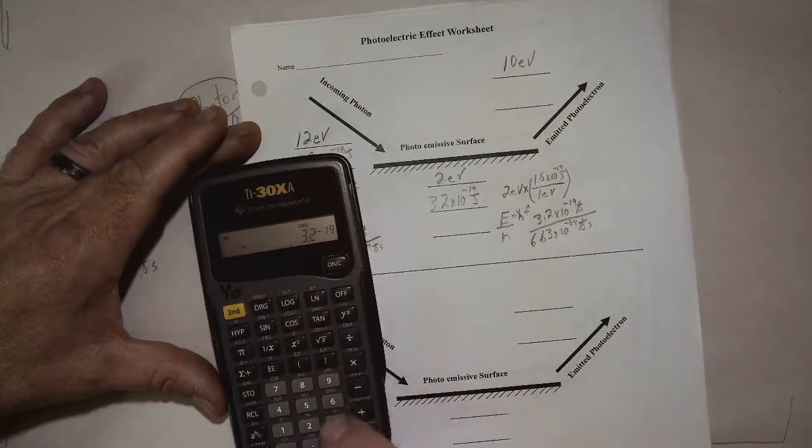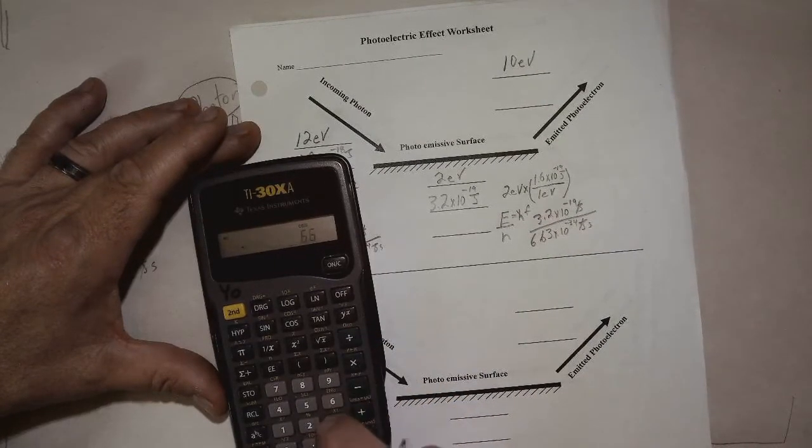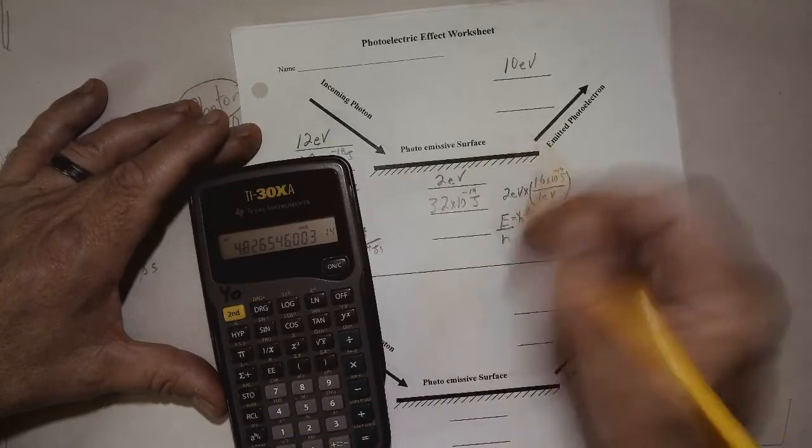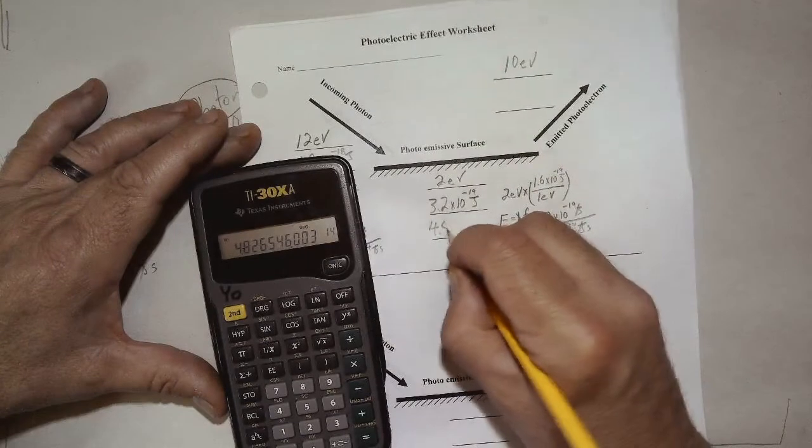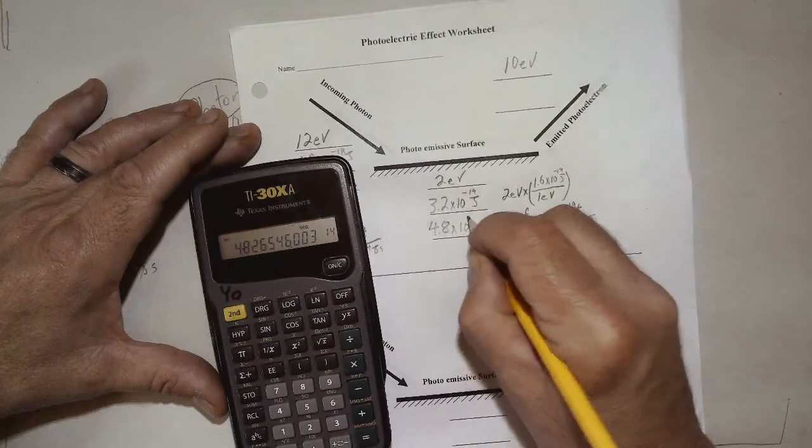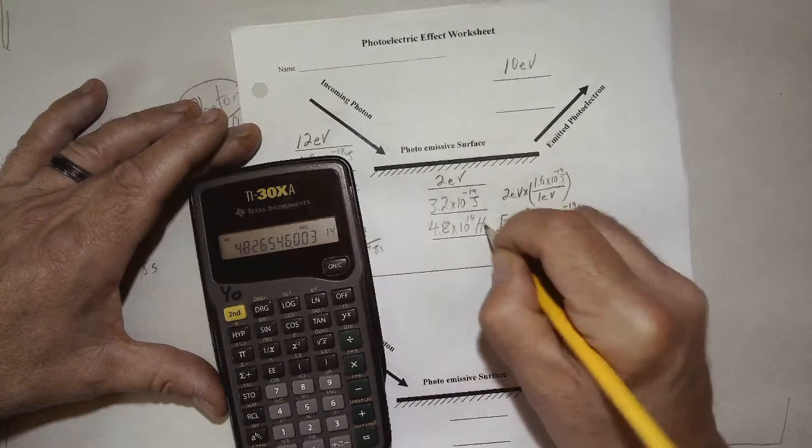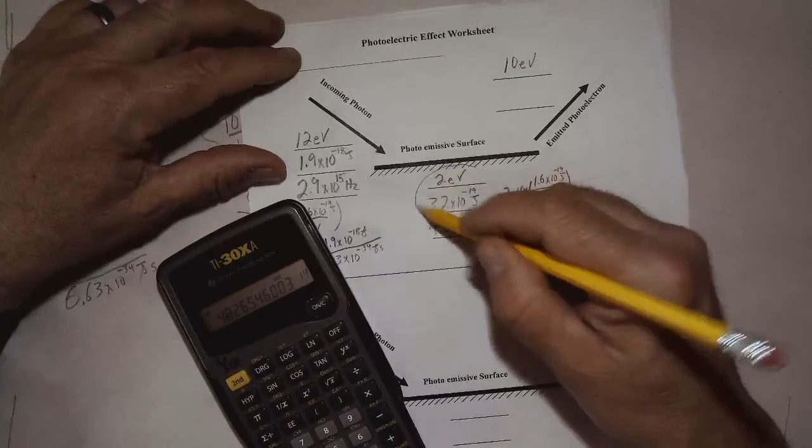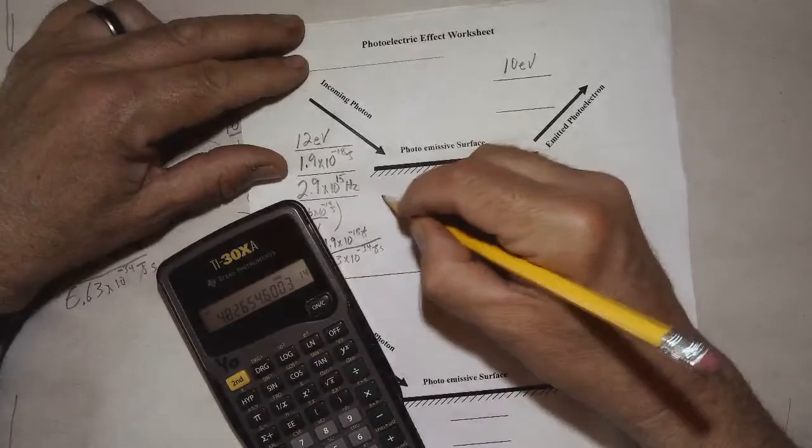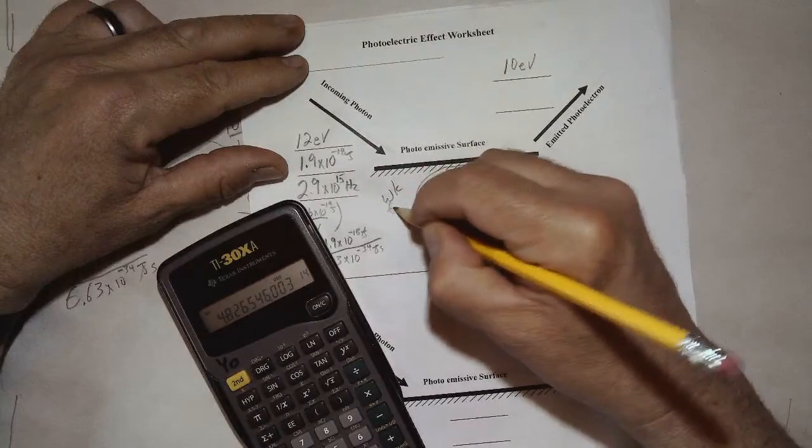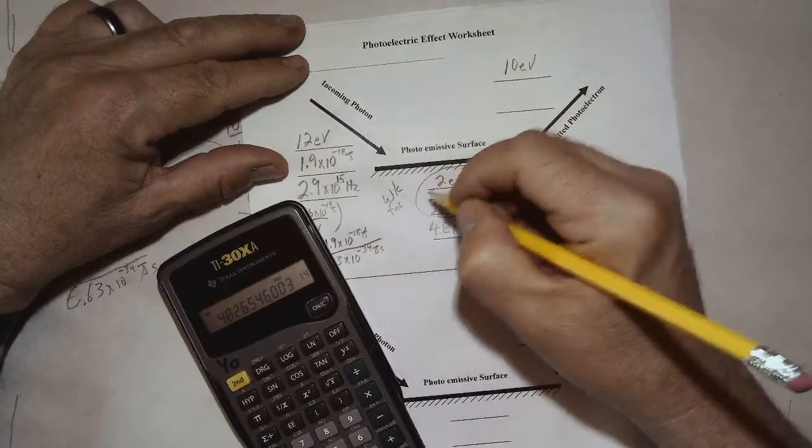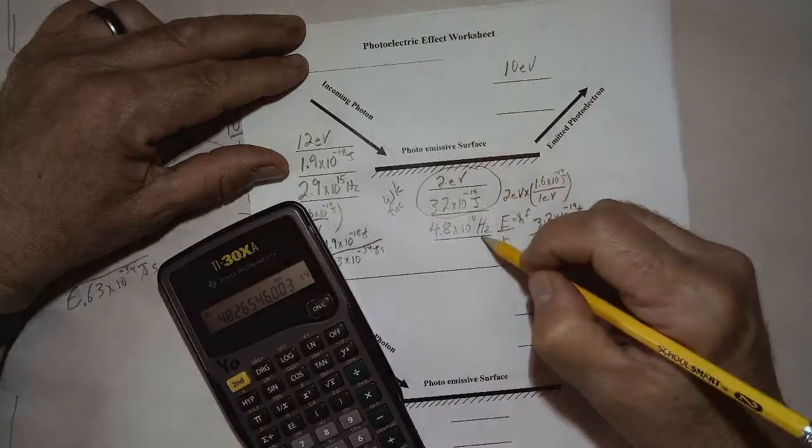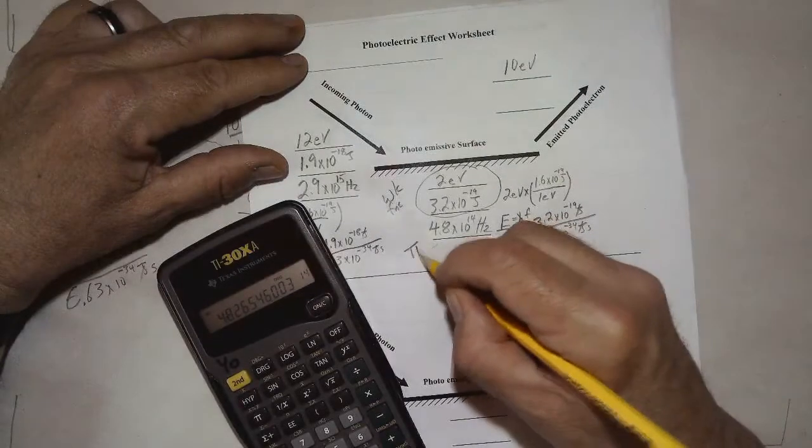So divided by 6.63 EE34 negative gives us 4.8 times 10 to the 14th hertz. Excellent. So if we recall, these two things represent the work function, and this then is the threshold frequency.